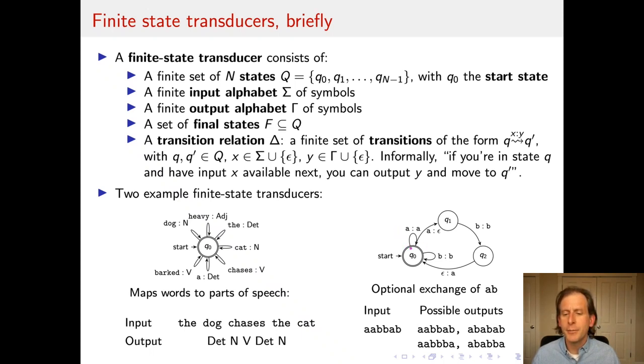And there are two things that it will do. One is it can leave an input unchanged because it has these loop arcs, which input an A and output an A, or input a B and output a B. It can just preserve the input and give it as the output.